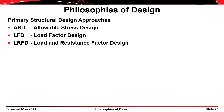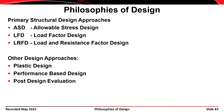There are many different approaches to structural design. Three primary ones are allowable stress design, load factor design, and load and resistance factor design. Allowable stress design was probably the oldest approach, and load and resistance factor design is probably the most prevalent at this point. Other approaches include plastic design, performance-based design, and post-design evaluation, but those are secondary to the primary methods.